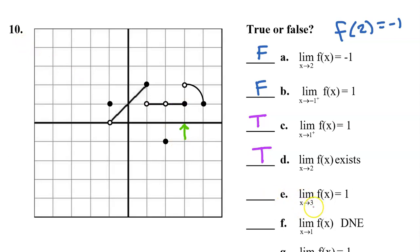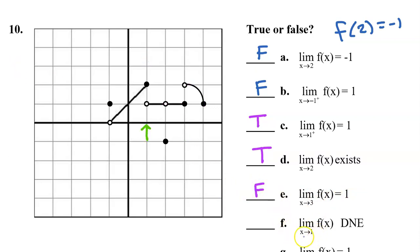Part E: the limit as x approaches 3 is 1. As we approach 3 from the left we are approaching a y value of 1, but as we approach 3 from the right we are approaching a y value of 2. These are different so the overall limit does not exist and definitely doesn't equal 1 — so this is false. Part F says the limit as x approaches 1 does not exist. As we approach 1 from the left we are approaching a y value of 2, and from the right a y value of 1. These limits are different, therefore the overall limit does not exist — which is what it says, so this is true.